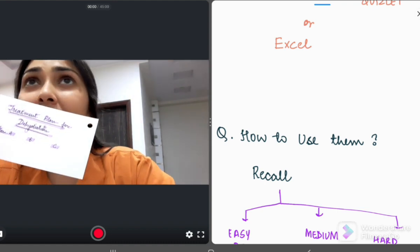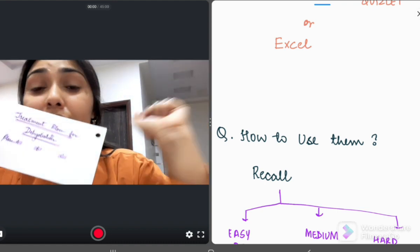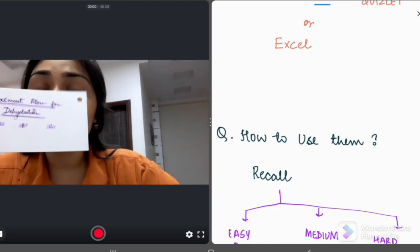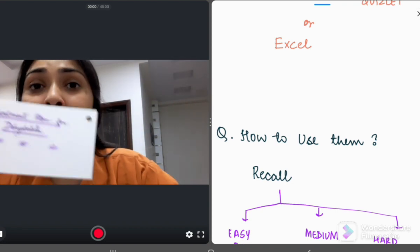C, it's severe dehydration, I have to admit the child and give correction, 30-70 correction, 100 ml per kg correction.